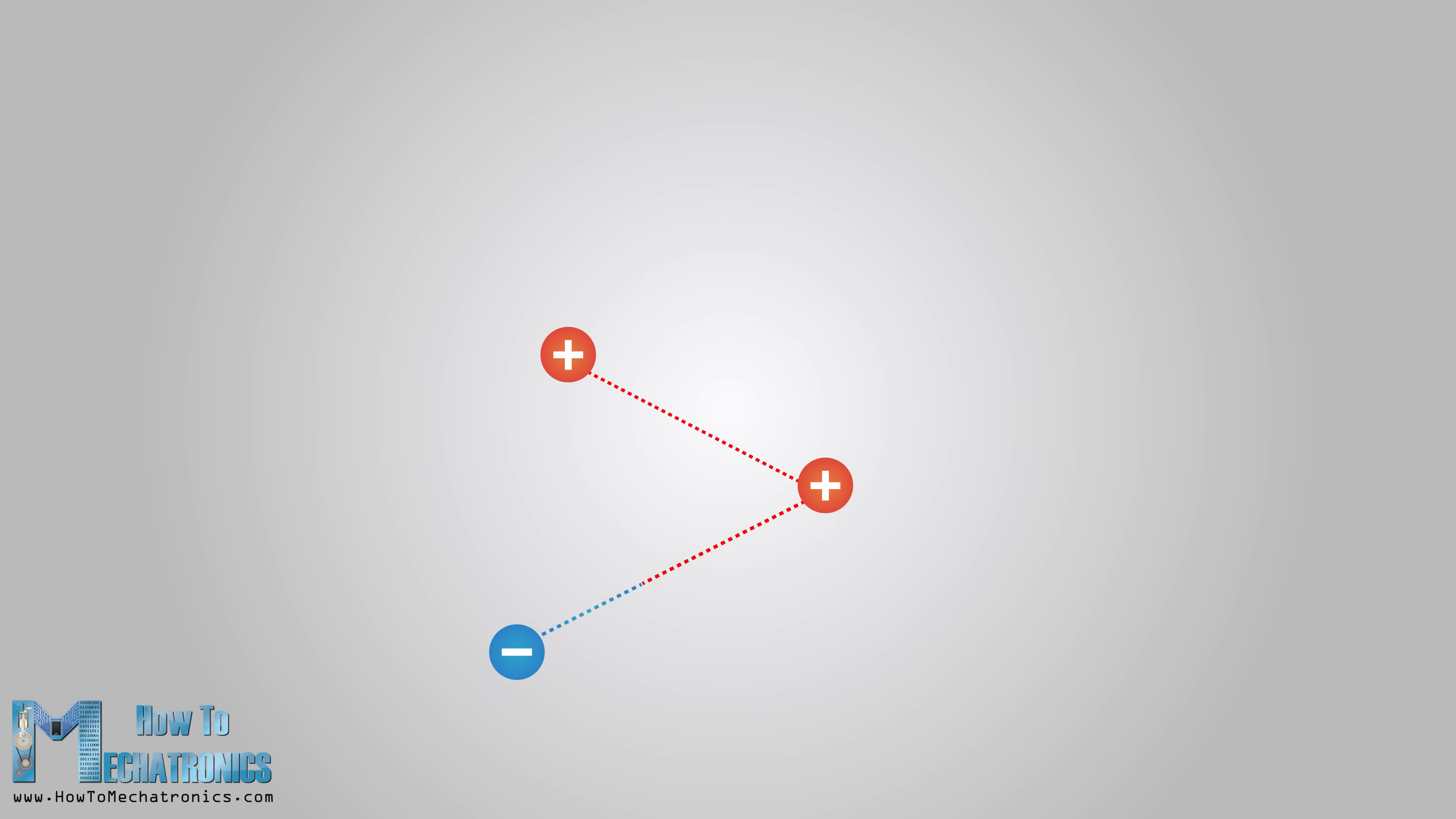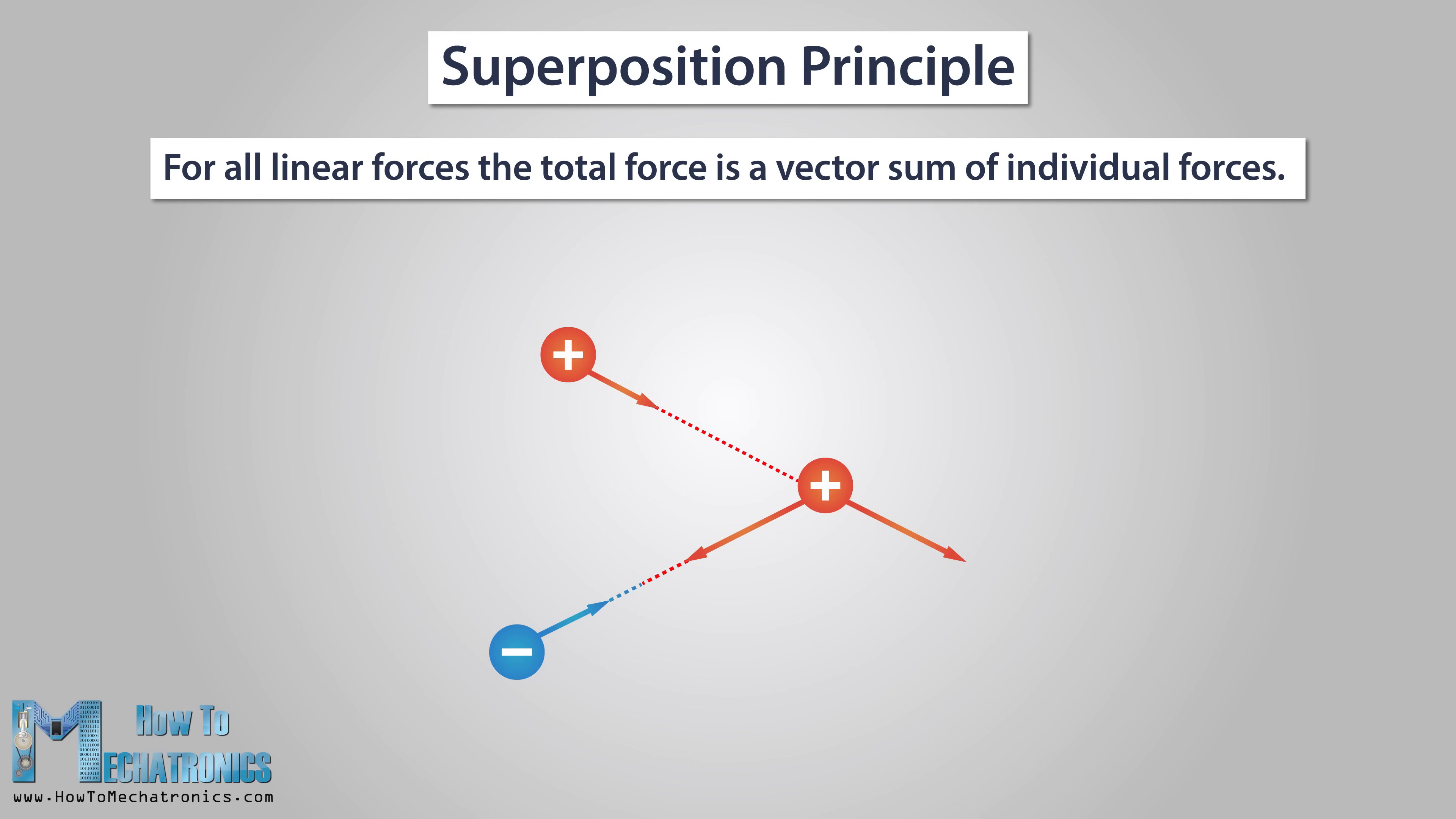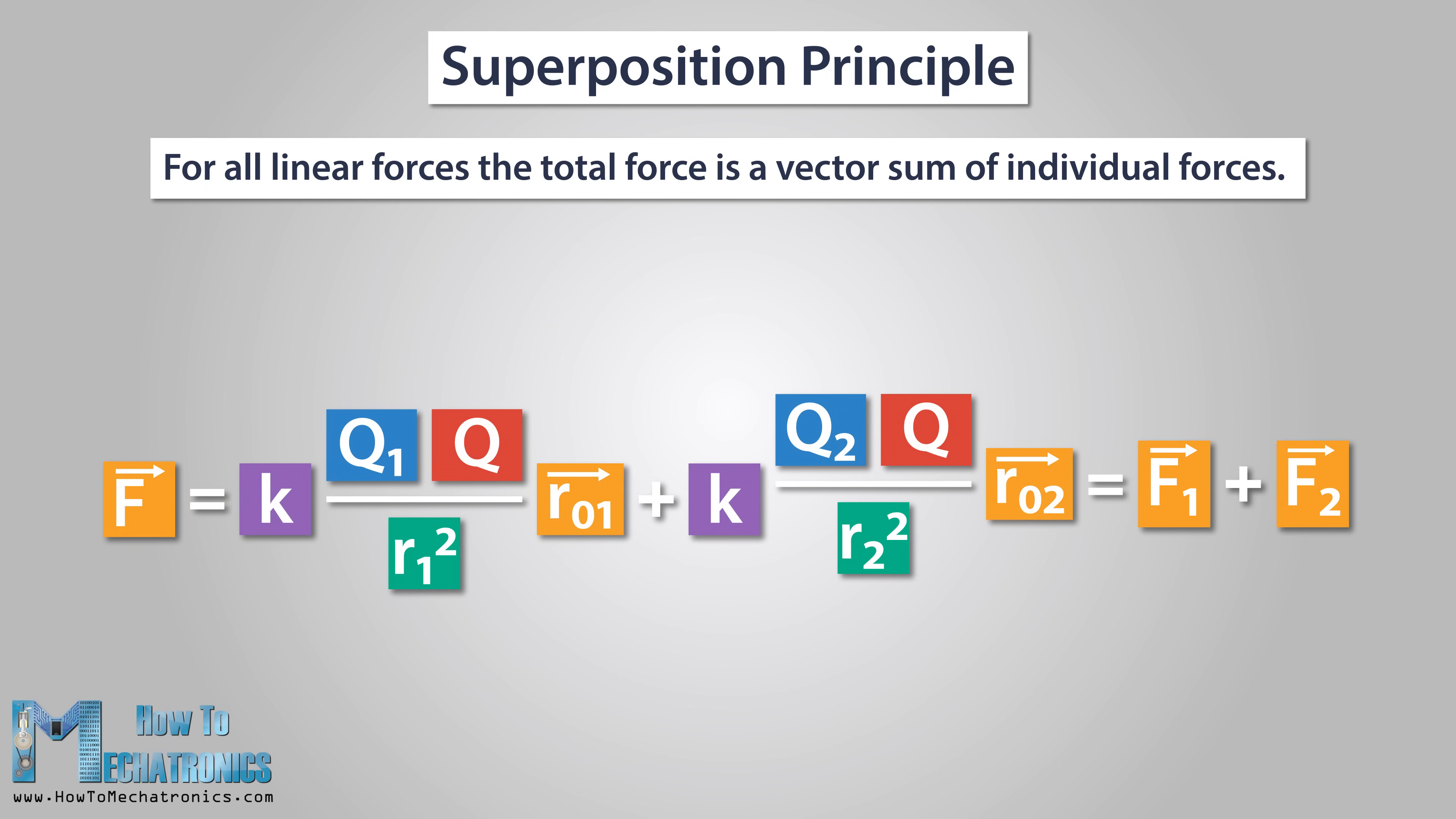If there are multiple point charges, let's say three, we can calculate the force of the two charges that acts on the third charge. This leads us to the superposition principle, which states that for all linear forces, the total force is a vector sum of individual forces. This allows Coulomb's law to be extended to include any number of point charges. In other words, the total Coulomb force from a system of point charges acting on a point charge can be found by adding up the forces from each of the other individual charges.